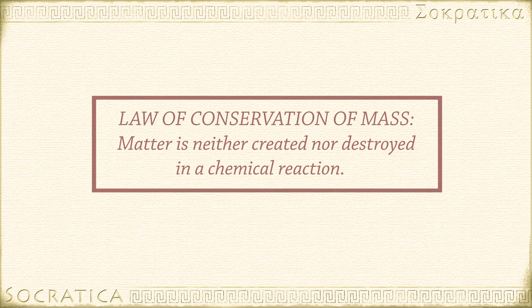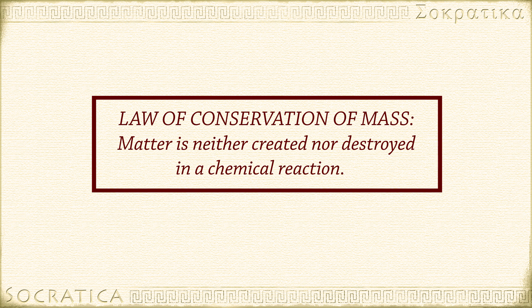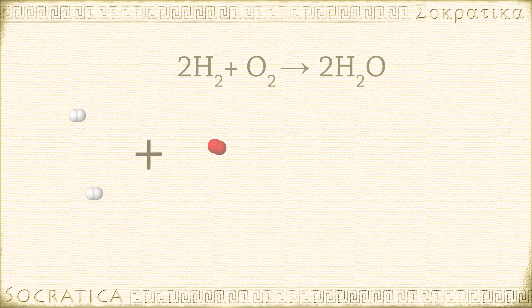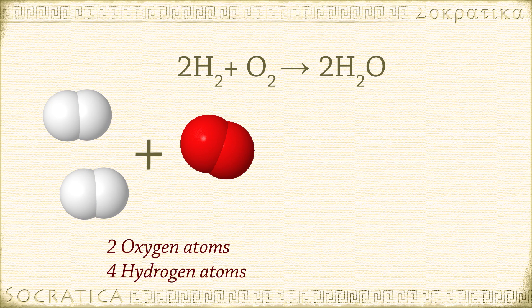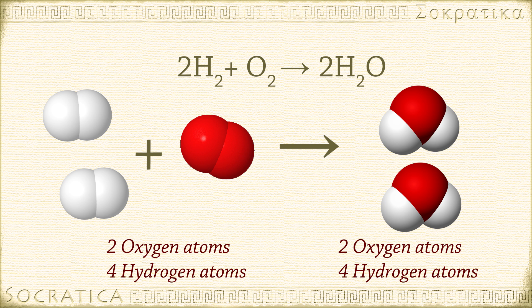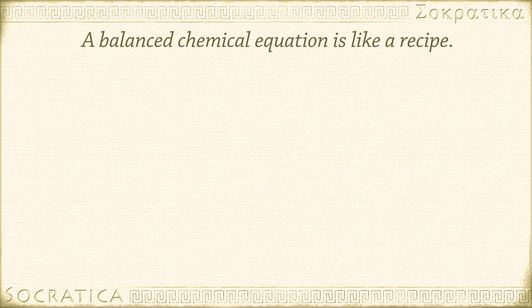Stoichiometry works because of the law of conservation of mass. Chemical reactions don't create or destroy matter. So say you have a certain number of atoms of oxygen at the start of a reaction — you will have the same number of atoms of oxygen at the end. You can recombine the atoms with other atoms, but you can't destroy them, and you can't change them into some other kind of atom.